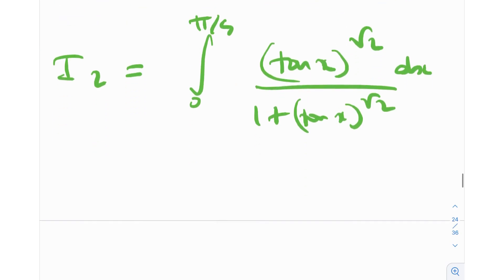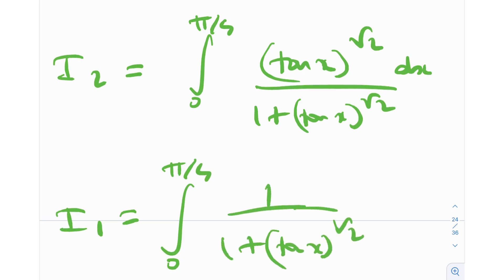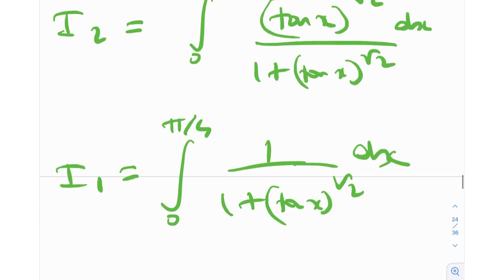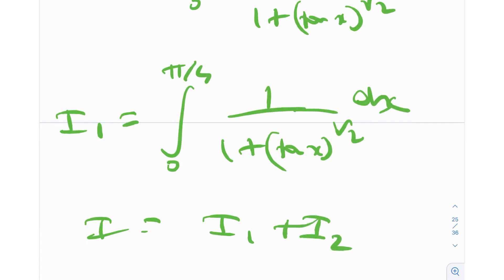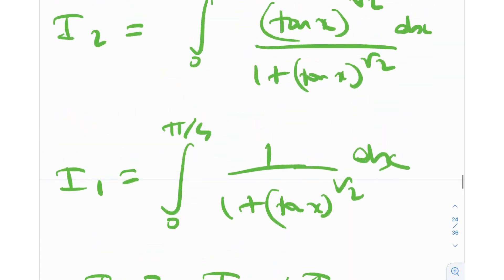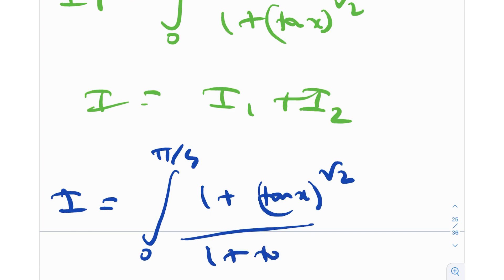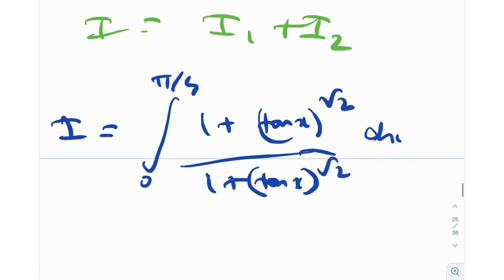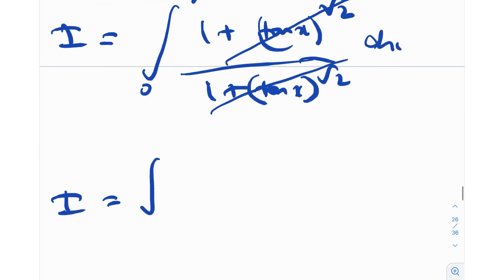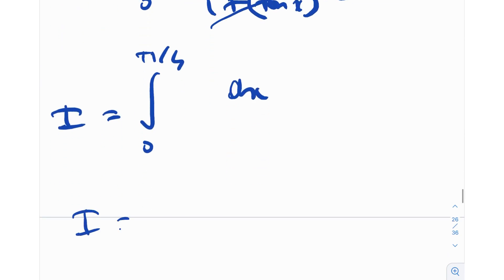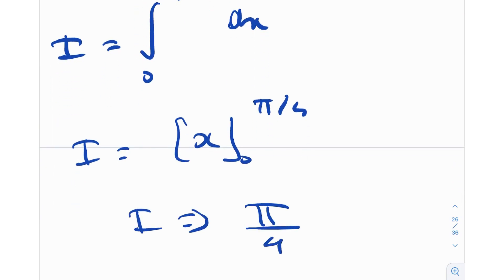Recall I₁ = integral from 0 to π/4 of 1 / (1 + tan^√2(x)) dx, and I = I₁ + I₂. Adding I₁ and I₂, the denominators are the same, and the numerators 1 and tan^√2(x) sum to 1 + tan^√2(x), which cancels with the denominator. So I = integral from 0 to π/4 of dx = x from 0 to π/4 = π/4. This confirms our result from method one.